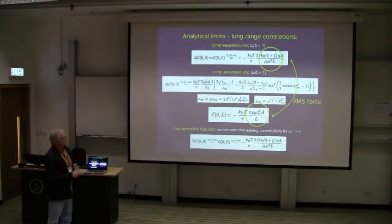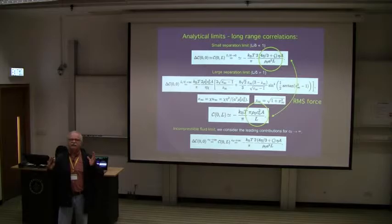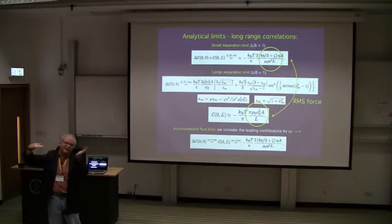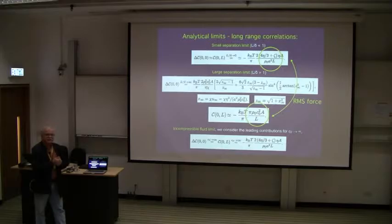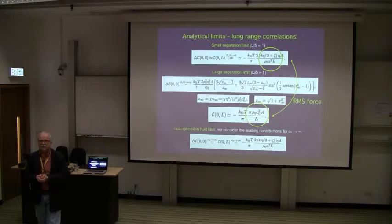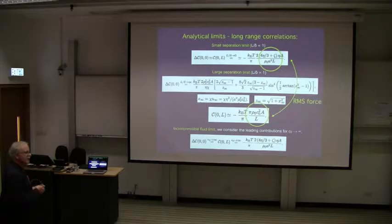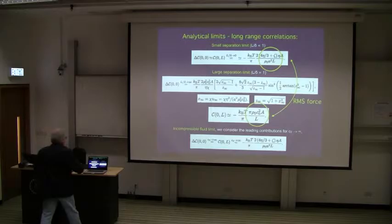Analytical estimates show that in the small separation limit, both the cross-correlator and the single-plate correlator go as 1/L. They scale as the surface area — thermodynamic scaling — and depend on the viscosities. In the large separation limit, the single-plate correlator levels off to a constant, while the cross-correlator still decays as 1/L with a minus sign. From the correlator or variance of the force, you can construct the root mean square force, which goes as 1 over the square root of L — very long range. But remember, this is the root mean square; the average is zero.